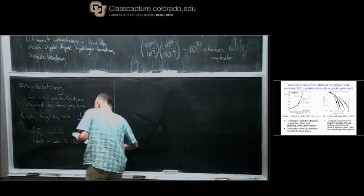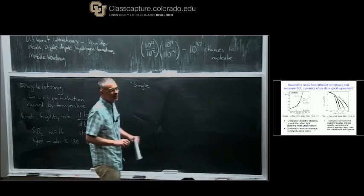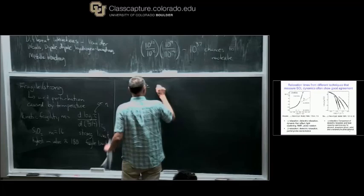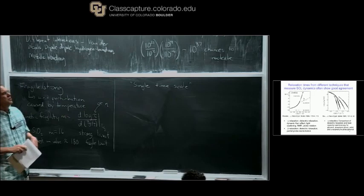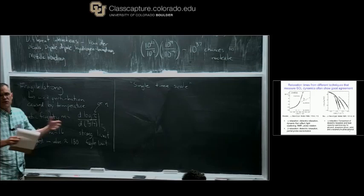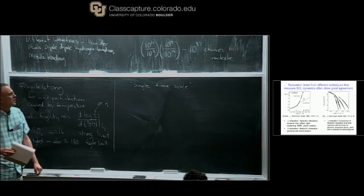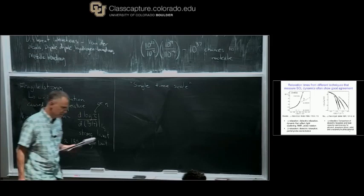You could say what I'm presenting right now is a sort of idealization, but it's a good starting point for thinking about these materials: as you cool down a supercooled liquid, there's a single timescale that's slowing down. Many, many different observables are telling you the same thing because there's one thing that's slowing down. I'm going to qualify this as we go on, but I think this really is a good starting point.